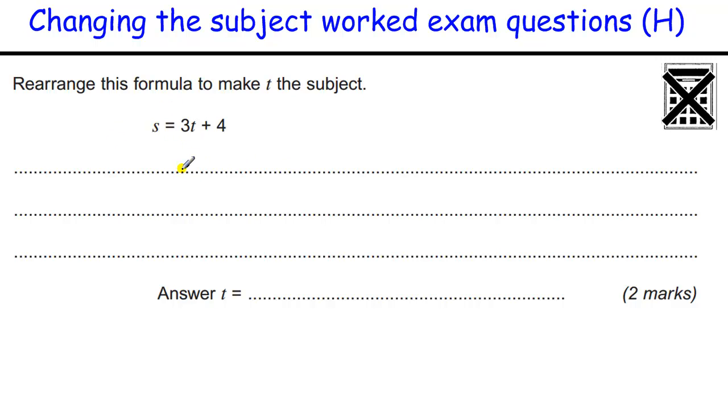Okay, we're going to make T the subject this time, so we need to take away the 4, just like we would with an ordinary equation we're trying to solve, move the 4 to the other side by taking it away, then move the 3 to the other side by dividing by it, so we're left with T equals S minus 4 over 3, trying to make an S look like an S not a 5.